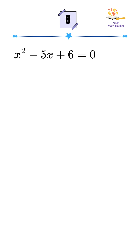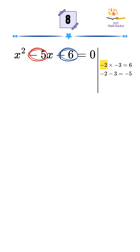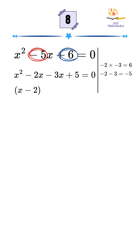To factor the quadratic, we need two numbers that multiply to 6 and add to negative 5. Those numbers are negative 2 and negative 3. So the equation becomes x minus 2 times x minus 3 equals 0.